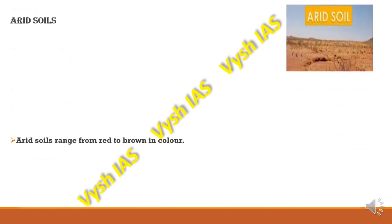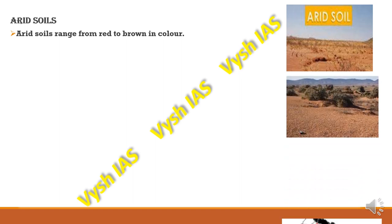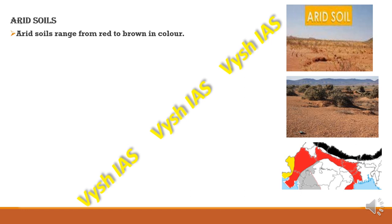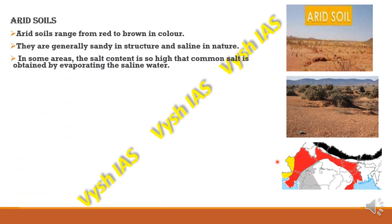Arid soils are mainly found in Western Rajasthan and drier regions. They range from red to brown in colour and contain kankars. They are generally sandy in structure and saline in nature — they look like sand but have very salty content.